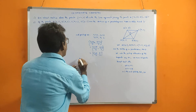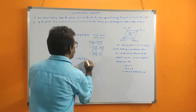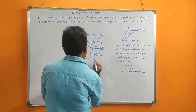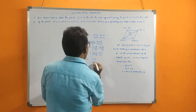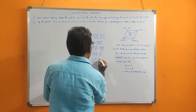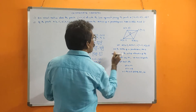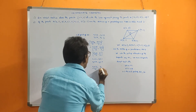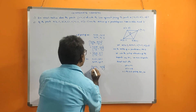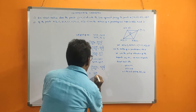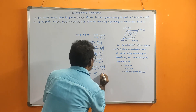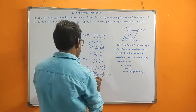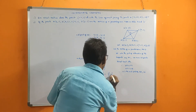Now calculate midpoint of AC. For A(6,1) and C(9,4): x1=6, x2=9, y1=1, y2=4. Midpoint is x1 plus x2 by 2, y1 plus y2 by 2, which equals 6 plus 9 by 2, comma, 1 plus 4 by 2 — that is 15 by 2, comma, 5 by 2.